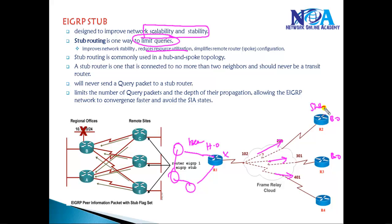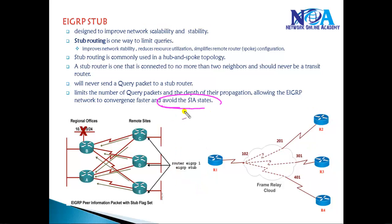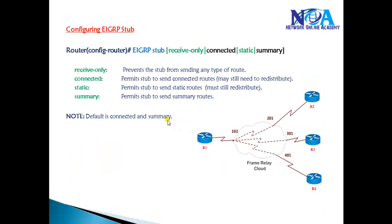I can configure the branch offices as stub routers. The stub router will never send a query packet to the stub router. This helps in avoiding most of the stuck in active states and helps EIGRP converge much faster in case of best path failures. To configure the stub, we just need to go to each router at the end locations.